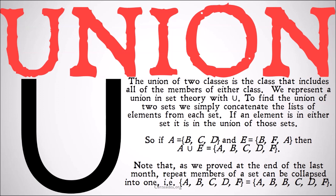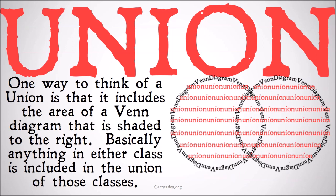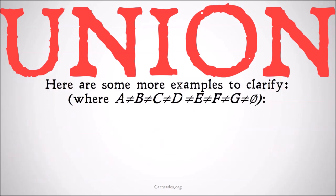In other words, {A, B, C, D, F} is the same as {A, B, B, C, D, F}. One way to think of a union is that it is a Venn diagram that includes the area of both circles as well as their overlap. Basically, anything that is in either class is included in the union of those two classes. Here are some more examples to clarify, where none of these different letters are equal to each other or the null set.